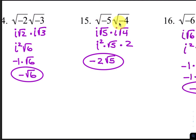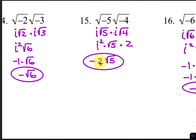For number 15, take the i's out first. So we have i square root of 5 and i square root of 4. i times i is i squared. The square root of 4 is 2, so you have radical 5 there by itself. i squared becomes negative 1, and negative 1 times 2 is negative 2, with the square root of 5 left over.